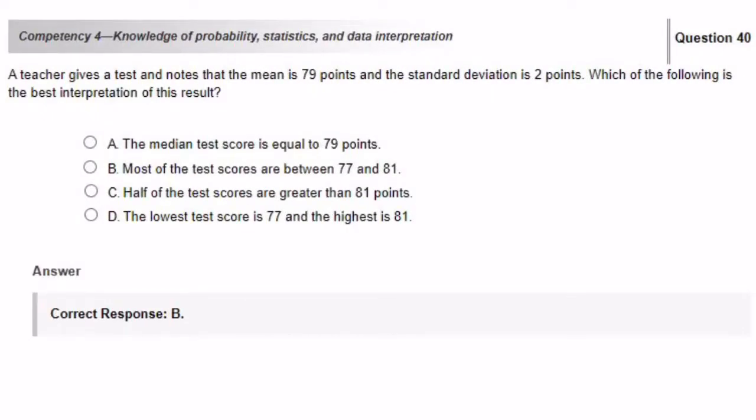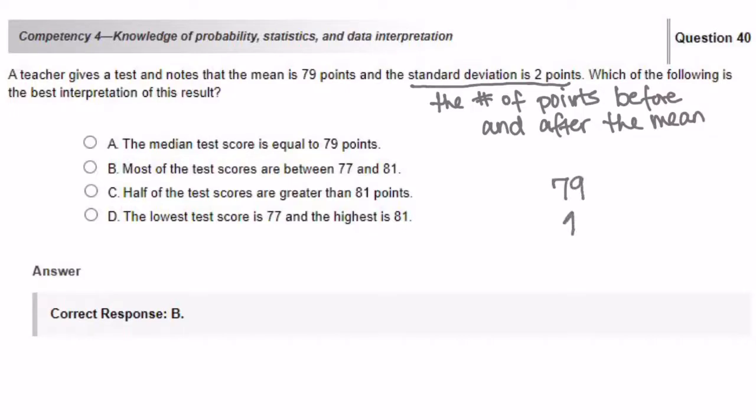A teacher gives a test and notes that the mean is 79 points and the standard deviation is 2 points. Which of the following is the best interpretation of this result? The standard deviation is going to be the number of points before and after the mean. So 79 is your mean. So before the mean and after the mean, you have to go 2 points up and 2 points down. Or you can say 79 plus 2 to get 81 and 79 minus 2 to get 77. So we are going to choose answer choice B. Most of the test scores are between 77 and 81.